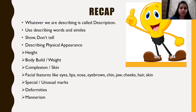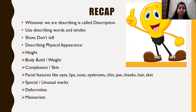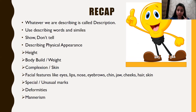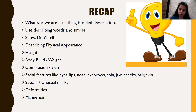Let's revise: whatever we are describing is called description. We can use describing words and similes to describe a person. We should never use only facts — we should give details to make our description interesting. Whenever describing a person, we start with their physical appearance: height, weight, body build, complexion, skin, facial features like eyes, lips, nose, eyebrows, chin, jaw, cheeks, hair, special or unusual marks, deformities, and mannerism.